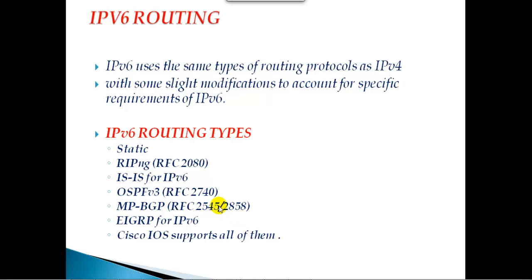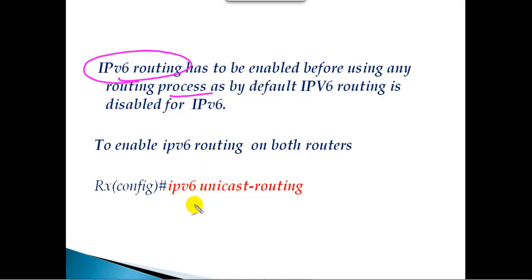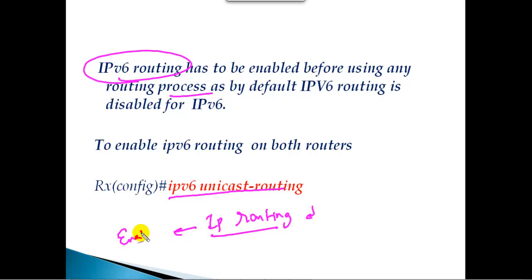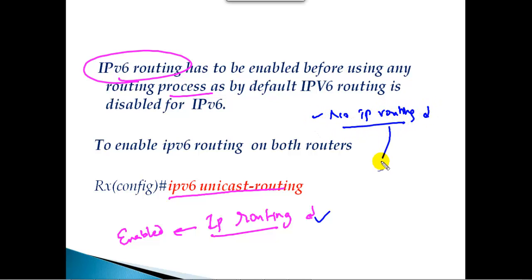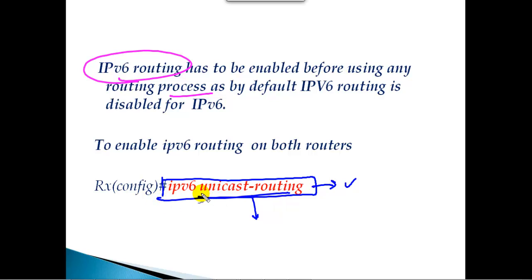We'll start with static routing in this section. One important thing to keep in mind: whenever we want to use IPv6 routing, it must be enabled before we use any routing process. We need to give the command 'ipv6 unicast-routing'. This command is equivalent to the 'ip routing' command in IPv4, which is enabled by default. However, in most Cisco IOS versions, IPv6 routing is disabled by default, so you'll get a message saying IPv6 routing is not enabled when you try to configure routing.